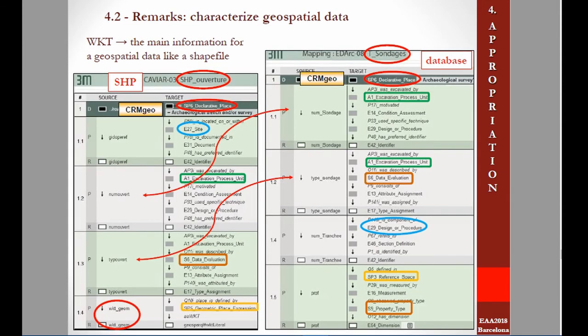Regarding the mapping of shapefiles, I treat them in the same way as their database counterparts, focusing on describing space. Here, for example, the reference entity is SP6 Declarative Place. Usual references follow to archaeology, to interpretation, to documents, and to over-spatial references. The main difference is the possibility of referring to WKT — the Well-Known Text format — through CRM Geo. This is a standard text format that stores information such as coordinate system reference, geometry type, and maximum extents of vector geometric objects.